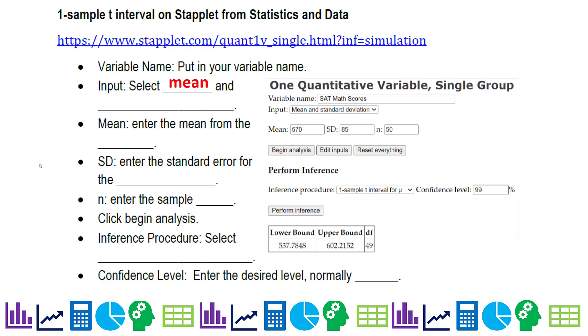So first of all, we're going to go to the one quantitative variable single group, not the T distribution, but the single group. We're going to select our mean. You can click mean and standard deviation on the input set up here. So it's very important to click that dropdown. Enter the mean from your data. Enter the standard error for the sample. Enter the sample size and then click begin analysis. And then make sure you select a one sample T interval. Make sure you put in your confidence level, which is usually normally 95%, but not in this example.